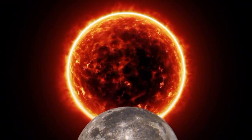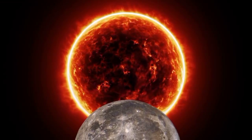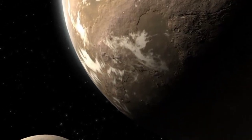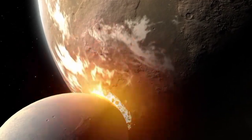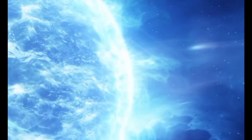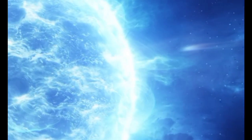Such conditions could create a narrow terminator zone, a twilight strip where temperatures might be just right to support liquid water. Could life thrive in such a region, or would the harsh conditions render it uninhabitable?